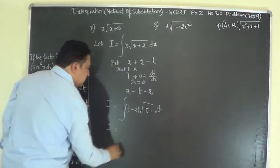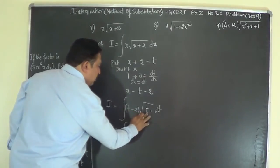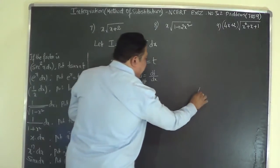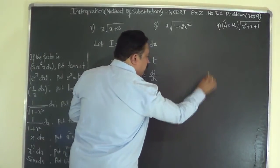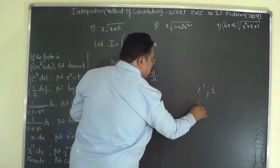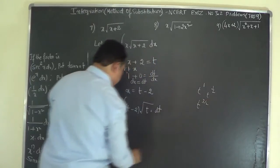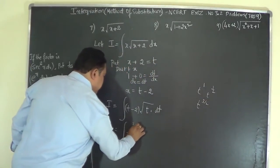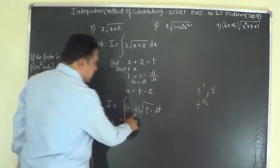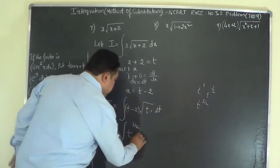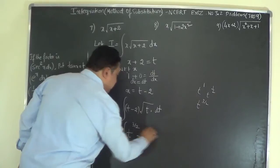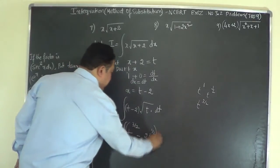So I equals the integral of (t minus 2) times the square root of t. Multiplying out: t times root t is t to the power of 3/2, and minus 2 times root t is minus 2 times t to the power of 1/2. So we have the integral of t^(3/2) minus 2·t^(1/2) dt.